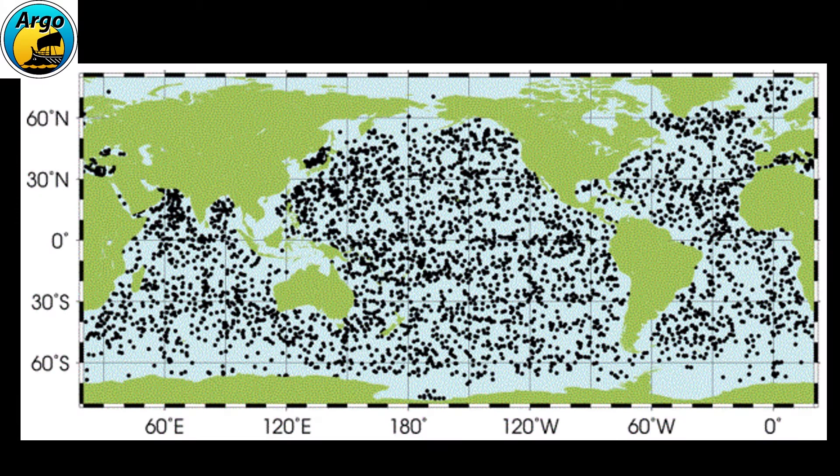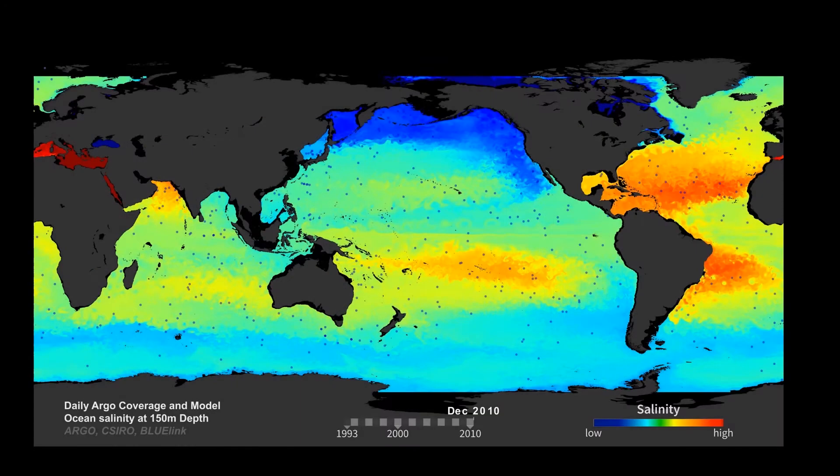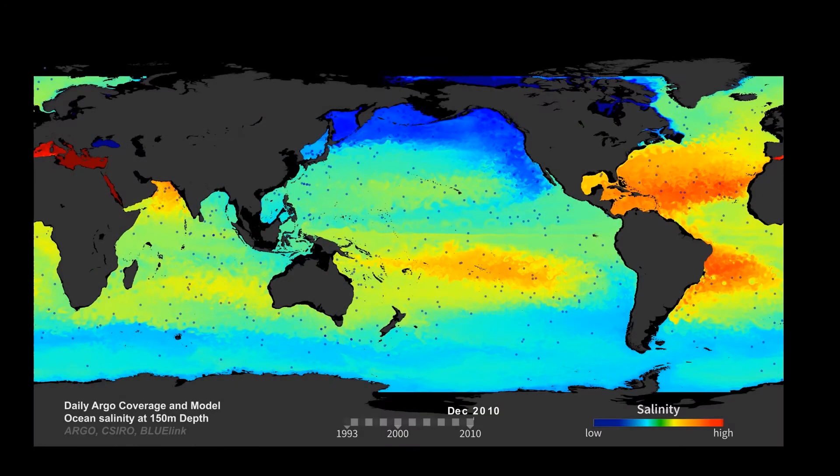Currently there's a system in place, it's called the Argo system, and it's about 3,800 floats that are located all around the world. They're just floating out in the ocean, that's all they do is float, but they can change their buoyancy to go up and down and take vertical dives, and they measure things like temperature and salinity, pressure, and they report that data back when they surface.